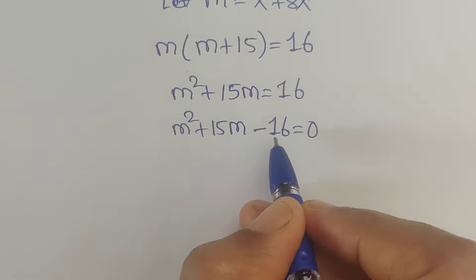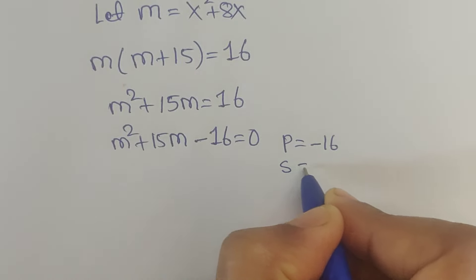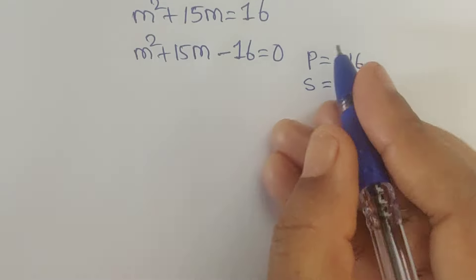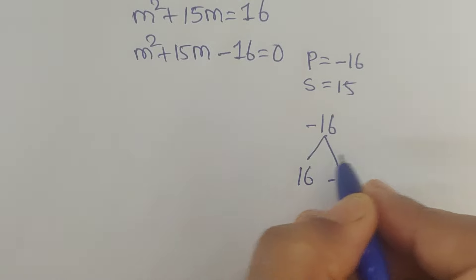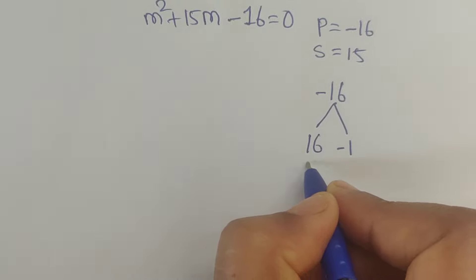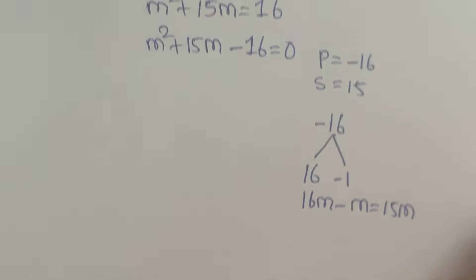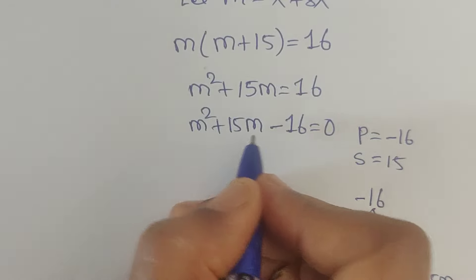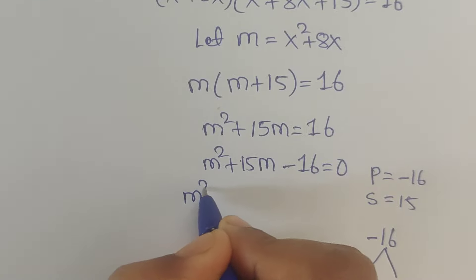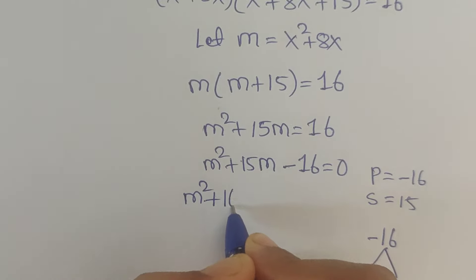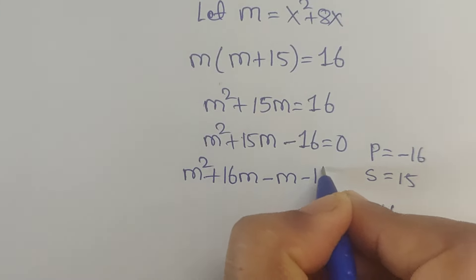The product is minus 16 and the sum is 15. So we need factors: 16 times minus 1 equals minus 16, and 16m minus m equals 15m. In place of 15m we write 16m minus m. So m squared plus 16m minus m minus 16 equals 0.